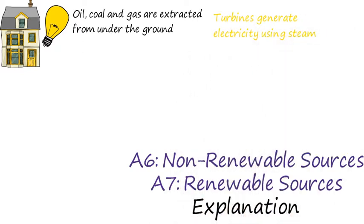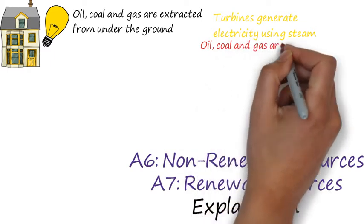Inside one of these generators, the burning of the oil, coal and gas boils water which produces steam to drive a turbine. It is the motion of the turbine which generates electricity.